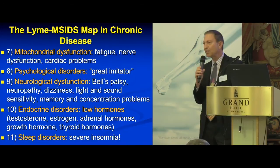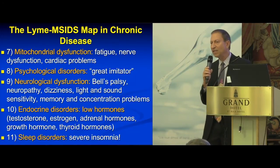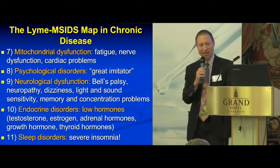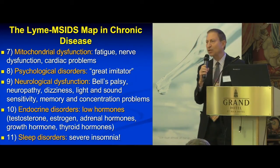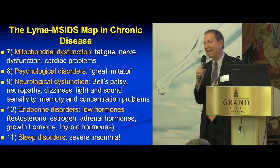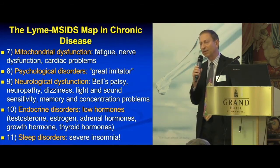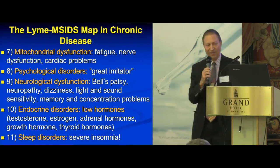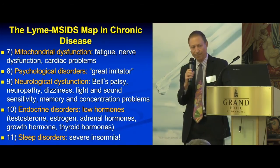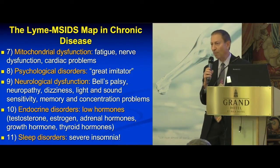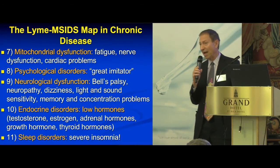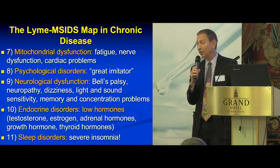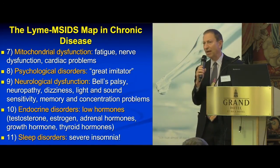The seventh is mitochondrial dysfunction. When you have free radicals and oxidative stress from chronic infections, they can damage the mitochondria — because DNA is protected by histones in the body, but the mitochondria are not. This can lead to chronic fatigue, nerve dysfunction, cardiac problems, and even cardiomyopathy. We've had patients whose cardiomyopathy was reversed by treating their Lyme disease and mitochondrial dysfunction.